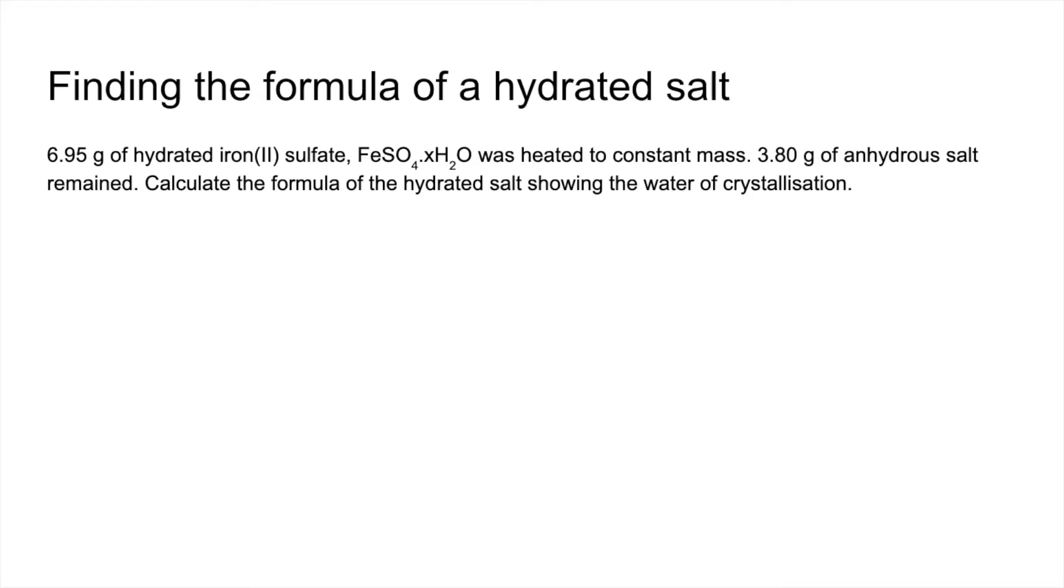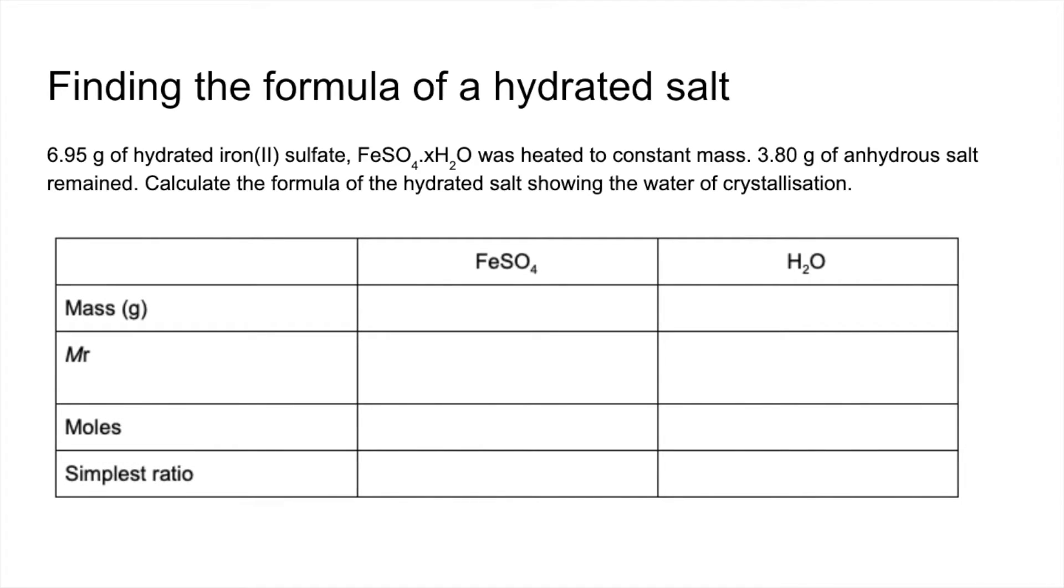Okay, so the way we're going to tackle this is like an empirical formula type calculation. We've got two columns, one for the anhydrous part, the FeSO4, and the other column for the water. We're going to find the ratio of anhydrous salt to water.